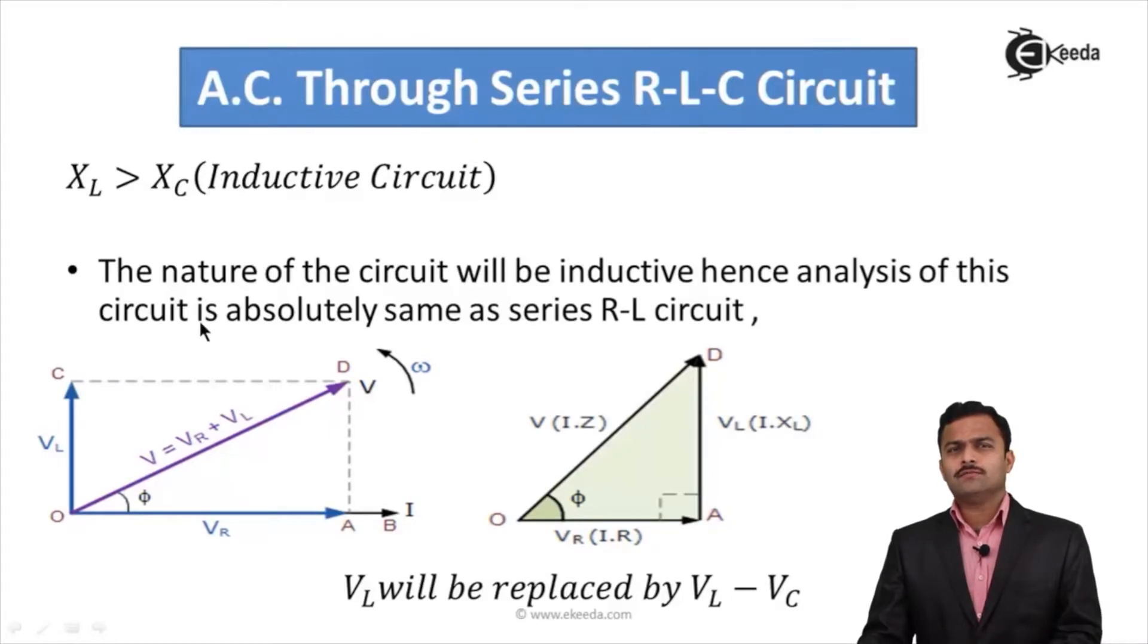That total voltage over here will be dominated by inductor and the value will be Vl minus Vc. The nature of circuit will be inductive because L is the dominating factor over C.